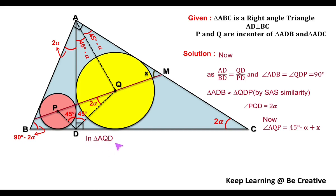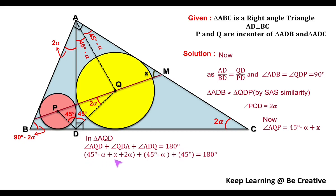In triangle AQD, applying the angle sum property: angle AQD plus angle QAD plus angle ADQ equals 180 degrees. Angle AQD is the sum of angle AQP plus angle PQD, which is (45 minus α plus x) plus 2α. Angle QAD is 45 minus α, and angle ADQ is 45 degrees. Substituting these values and calculating, angle x comes out to be 45 degrees.